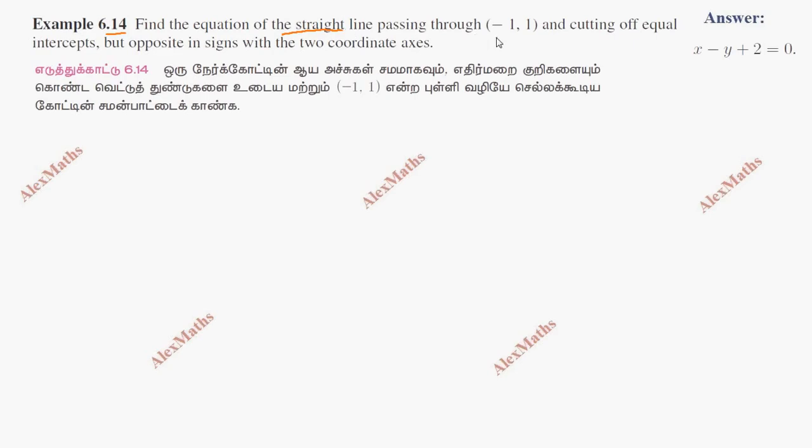Find the equation of the straight line passing through (-1, 1) and cutting off equal intercepts but opposite in sign with the two coordinate axes. If you look at the equation of the line, the intercept form is x by a plus y by b equal to 1.